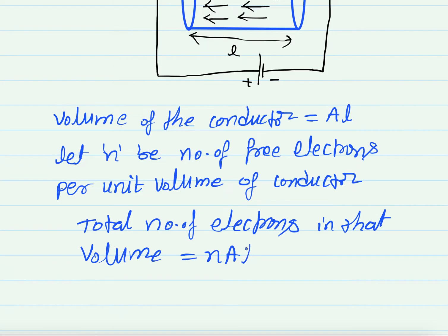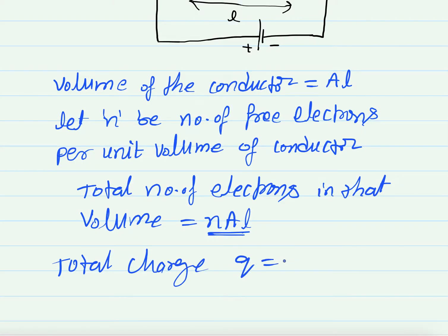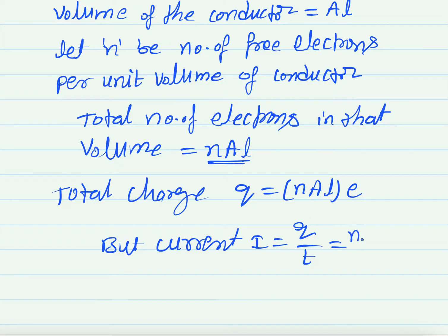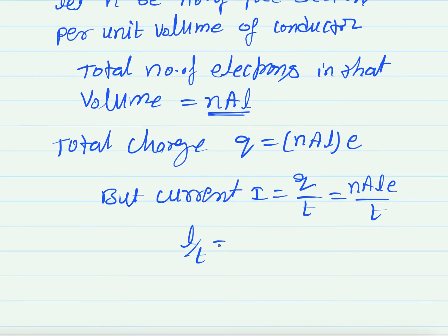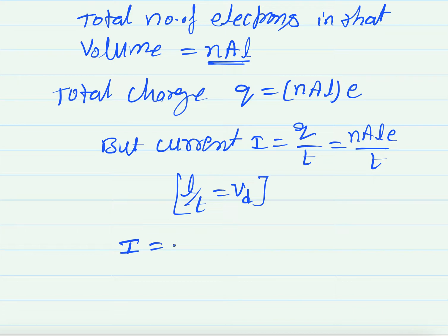The total number of electrons in that volume is equal to n into A into l. The total charge Q is equal to the total number of electrons into the charge of each electron, that is small e. For the current formula, we substitute n·A·l·e divided by t, where l by t is nothing but the drift velocity vd.